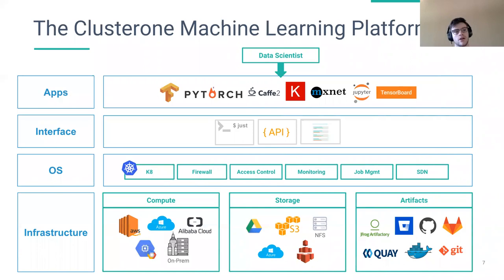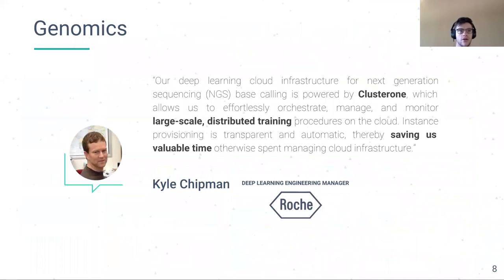The platform runs on top of any infrastructure — any public cloud, small cloud providers, on-premise, or both — and can use any storage and any code store. We started working with customers in the life science industry before generalizing to any industry. We worked with Roche's deep learning team and helped them put in place a large-scale infrastructure for distributed training on terabytes of genomics data.